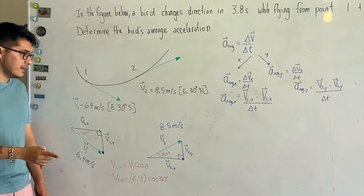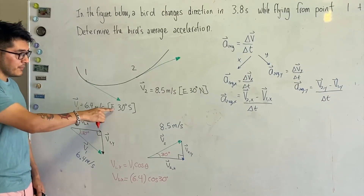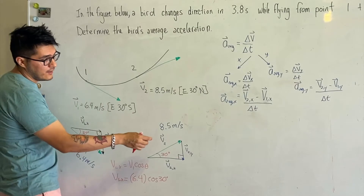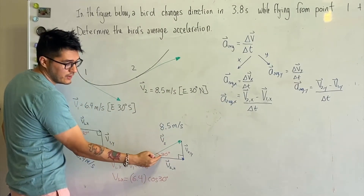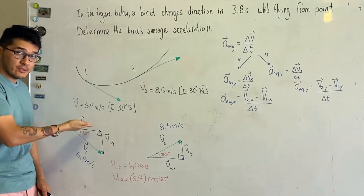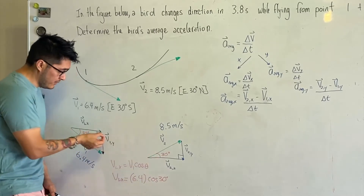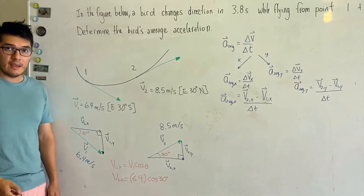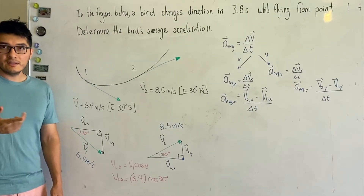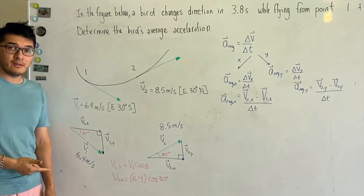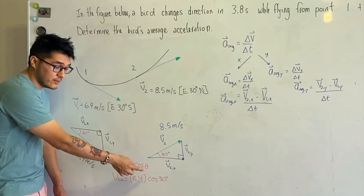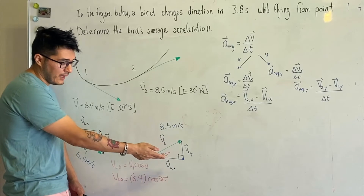The angle theta for the first velocity is east 30 degrees south — that's the angle it makes — and for the second velocity it is east 30 degrees north. Whenever the angle is closest to the horizontal axis, the x component will always be the cosine ratio and the y component will always be the sine ratio. You can verify this using cosine = adjacent over hypotenuse or sine = opposite over hypotenuse. If the angle is closest to the horizontal, use cosine for x and sine for y.